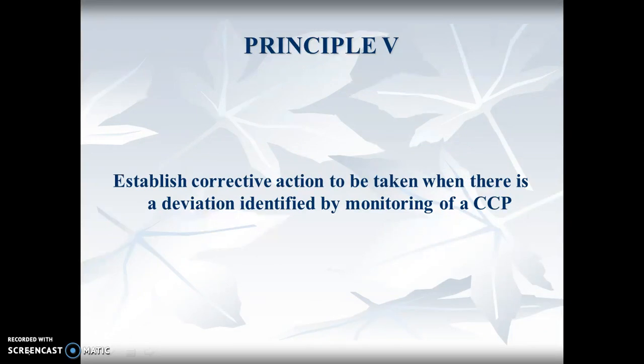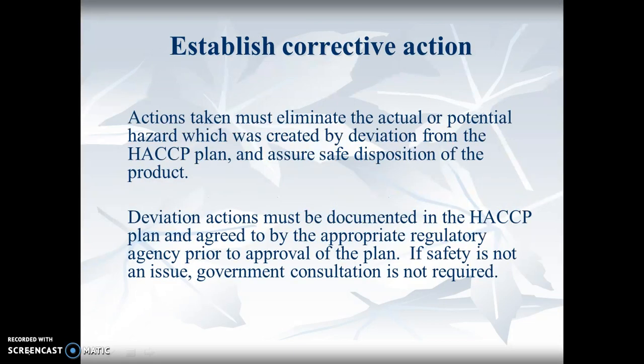Principle 5: Corrective action must be taken when there's a deviation. Corrective action refers to actions that eliminate the actual or potential hazard. It might not have occurred yet - you might just recognize that something's about to occur. You go through and start working on it, which is created by deviation from the HACCP plan, and ensure a safe disposition of the product.